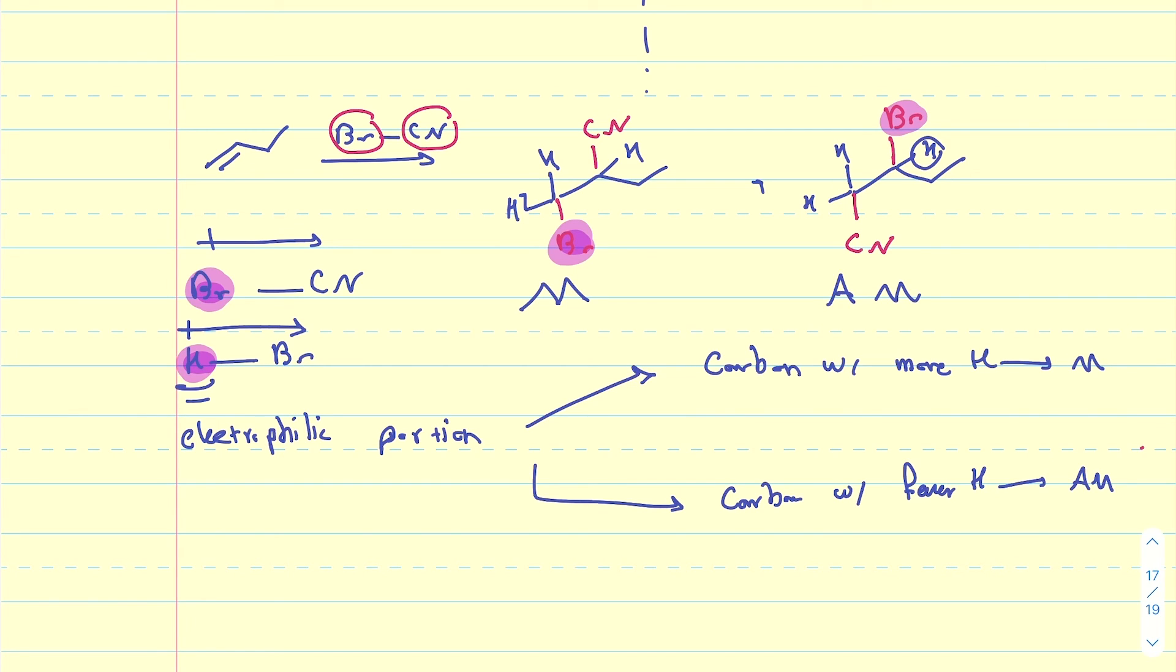So, to recap, if the electrophilic portion of the molecule that is being added is added to the carbon with more hydrogens on it, that is Markovnikov addition. If the electrophilic portion of the molecule is added to the carbon with fewer hydrogens, that is called the anti-Markovnikov addition.